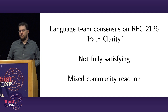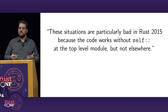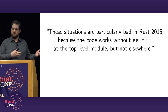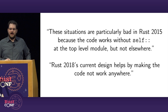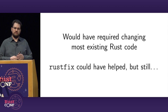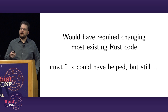To best sum up what we later realized the issue was, I want to use a post that Aaron Turon wrote to describe the module system as proposed. He said these situations — dealing with submodules — are particularly bad in Rust 2015 because the code works without 'self::' in the top-level module, but not elsewhere. Rust 2018's current design helps by making the code not work anywhere. Technically that's a consistency. It also would have required changing most existing Rust code to adopt this new module system, and none of us were wildly excited about what felt like the most invasive Rust 2018 change.